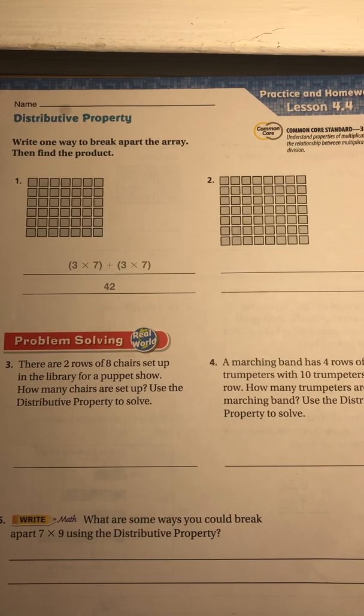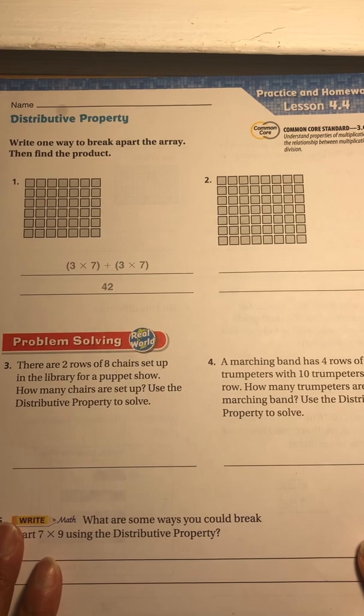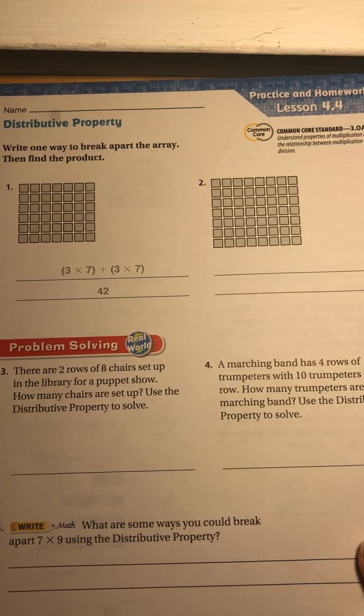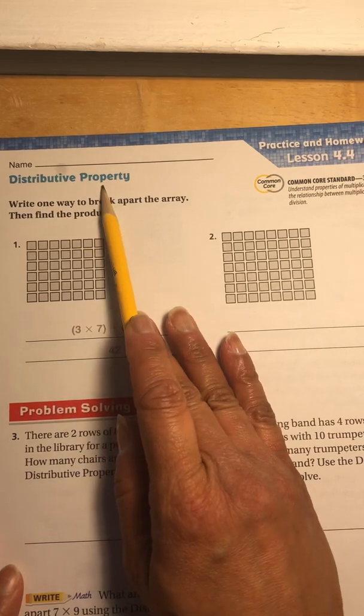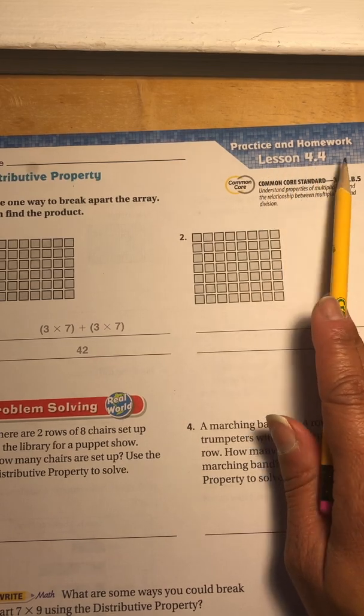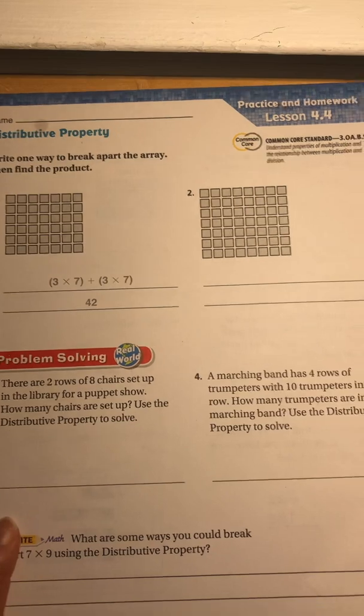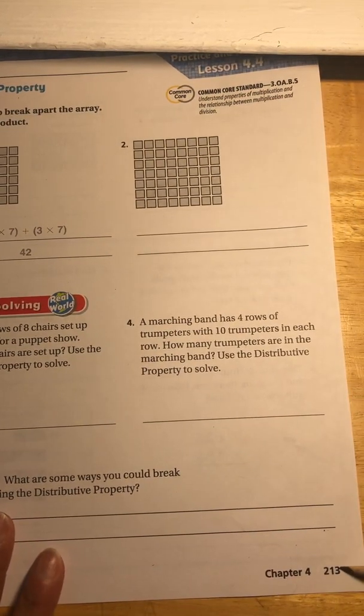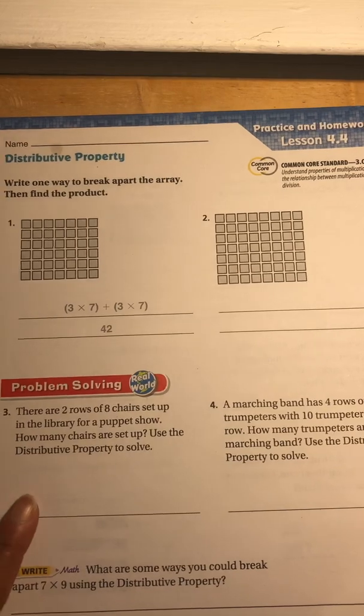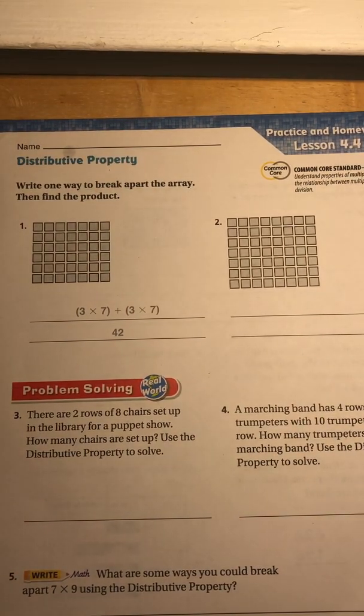Hi boys and girls, it's Ms. Harling. Today is Tuesday, January 5th, 2021. I am here today to go over tonight's homework. At the top of this paper, it says Distributive Property, and on the left-hand side it says Practice and Homework Lesson 4.4. This is page 213, and I will do the back of the sheet, which is page 214. I'm going to help you with some of the problems, and then the rest you will do on your own.